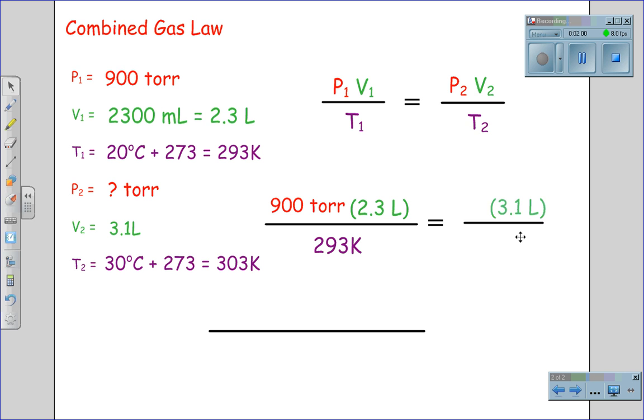On the right side of the equation, we have 3.1 liters divided by 303 Kelvin, and we are looking for pressure 2 on the top.